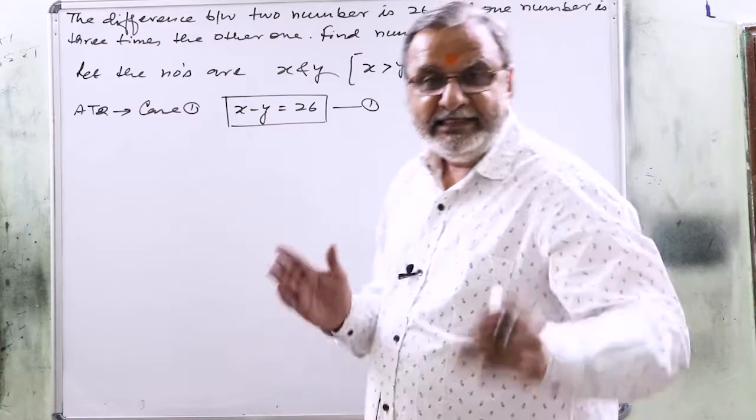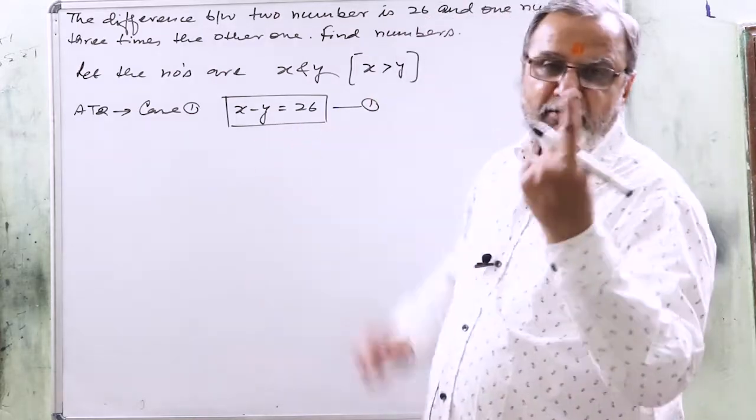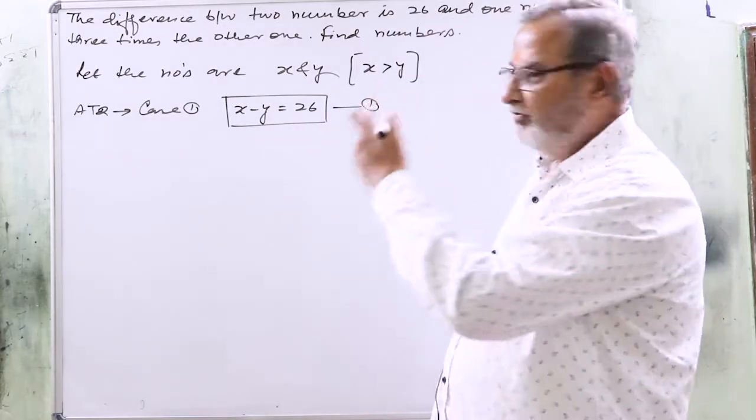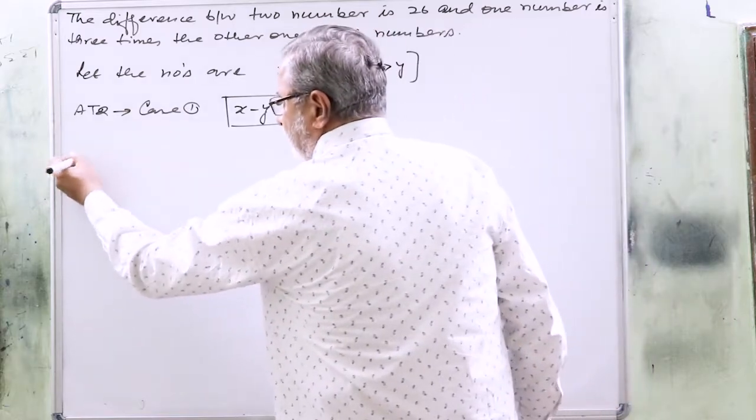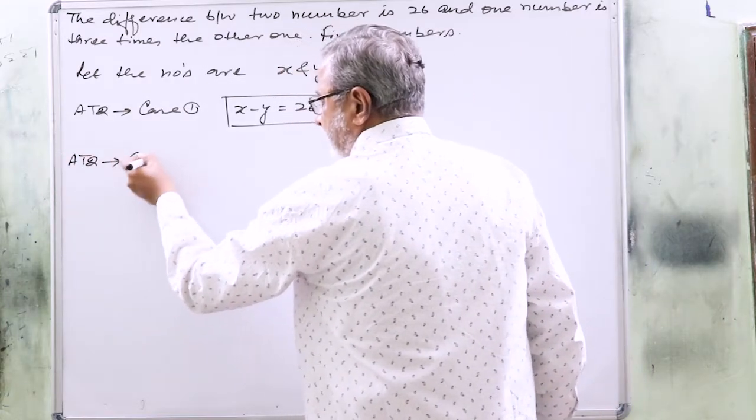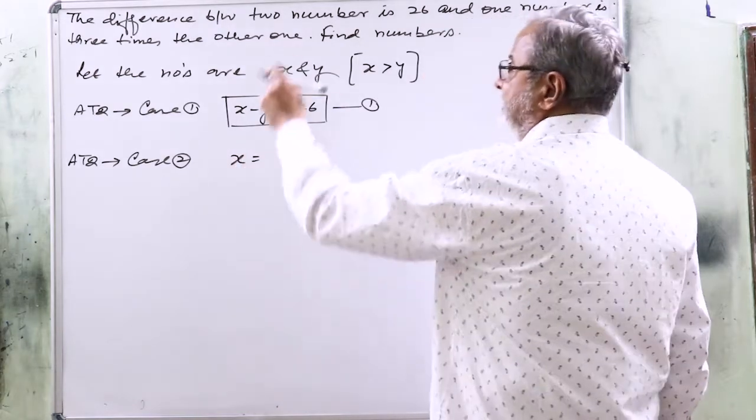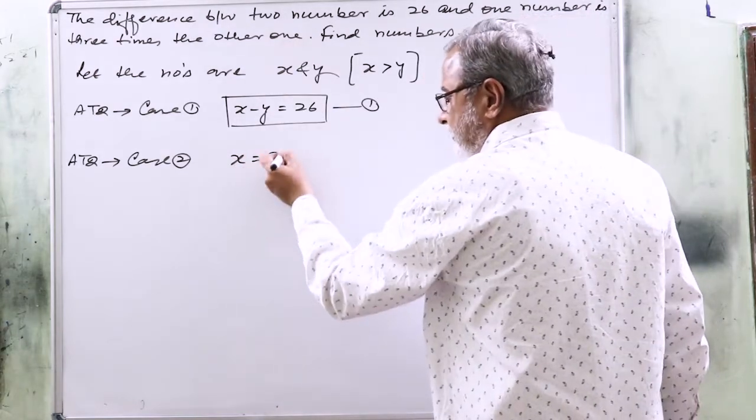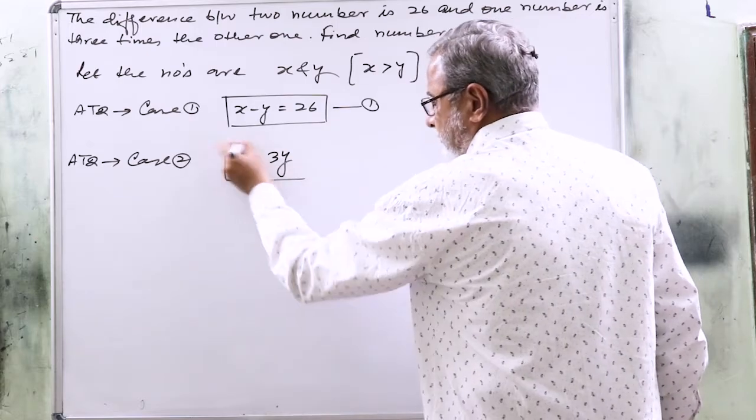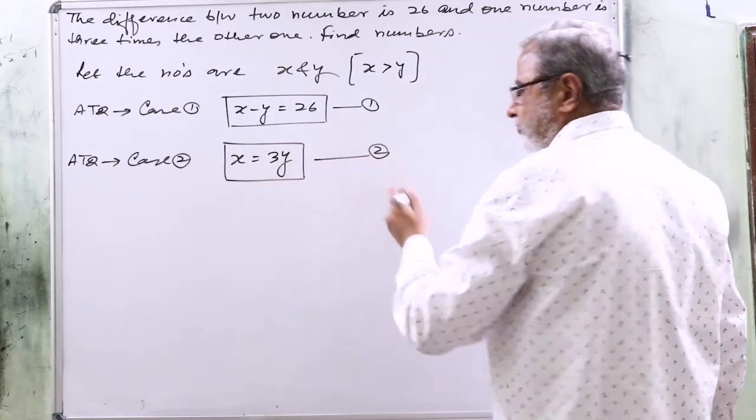Now case 2, what is case 2? One number is three times the other one. So according to question, case 2, that is, the larger one is three times the smaller one. So x equals 3y. This is equation number 2.